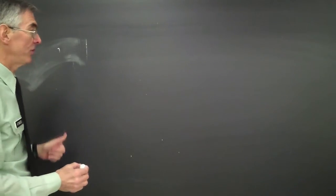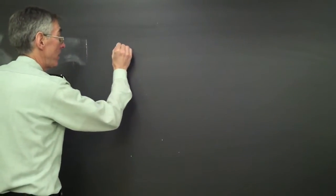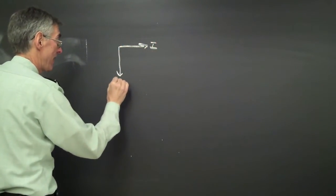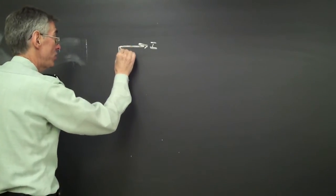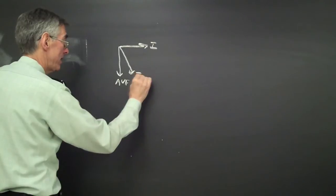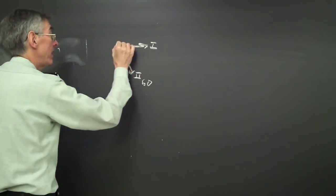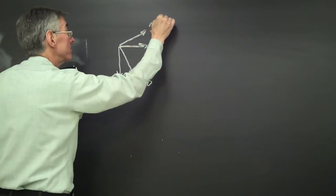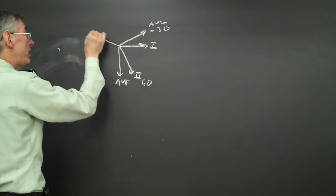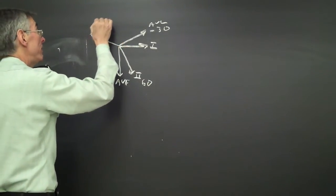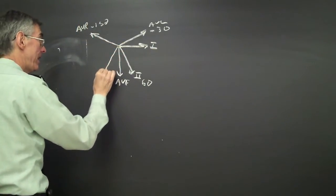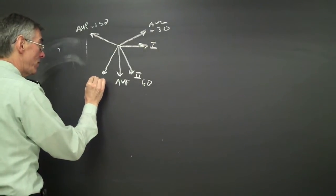When I look at axis, I look at AVF, lead one is, this is AVF, and lead two is at 60 degrees. AVL is minus 30, AVR is minus 150, and three is positive 120.